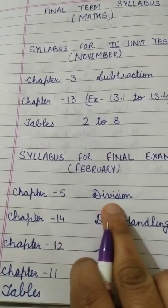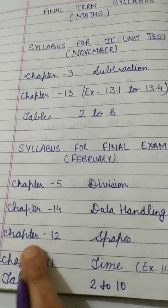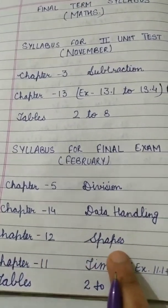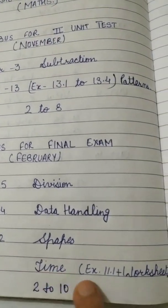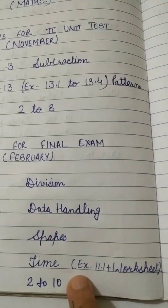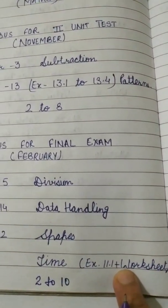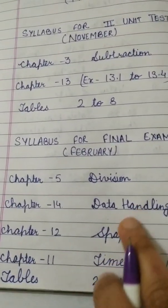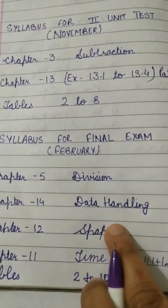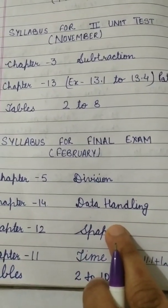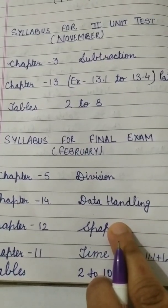Now, the syllabus for the final exam, which is going to be held in February: Chapter 5 — Division; Chapter 14 — Data Handling; Chapter 12 — Shapes; Chapter 11 — Time, which will include Exercise 11.1 plus the worksheet.